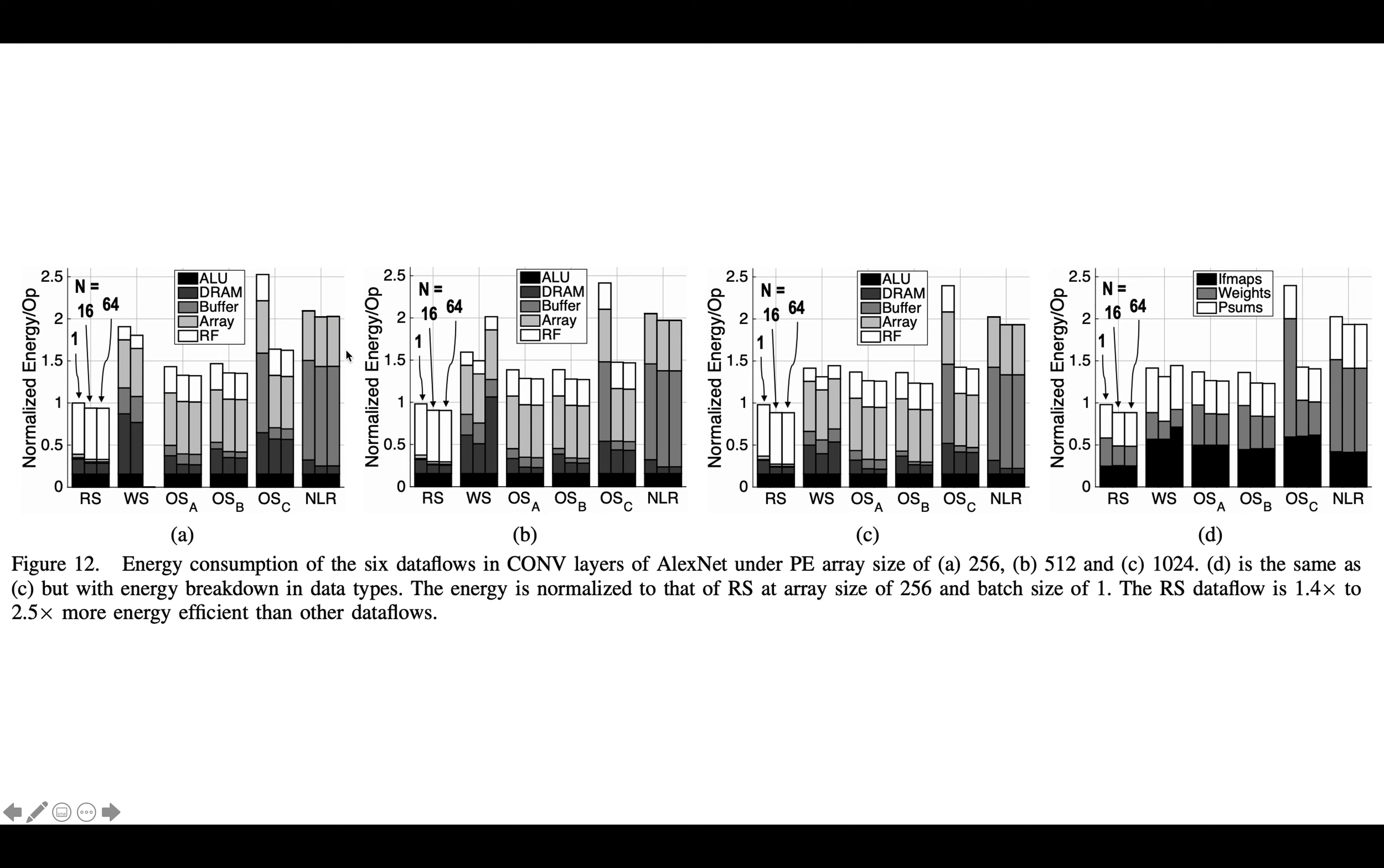which, as you can see from this color chart, is a different kind of data flow where there's actually no need for a register file. And so what they find across the board is that, generally speaking, row stationary is the best data flow.